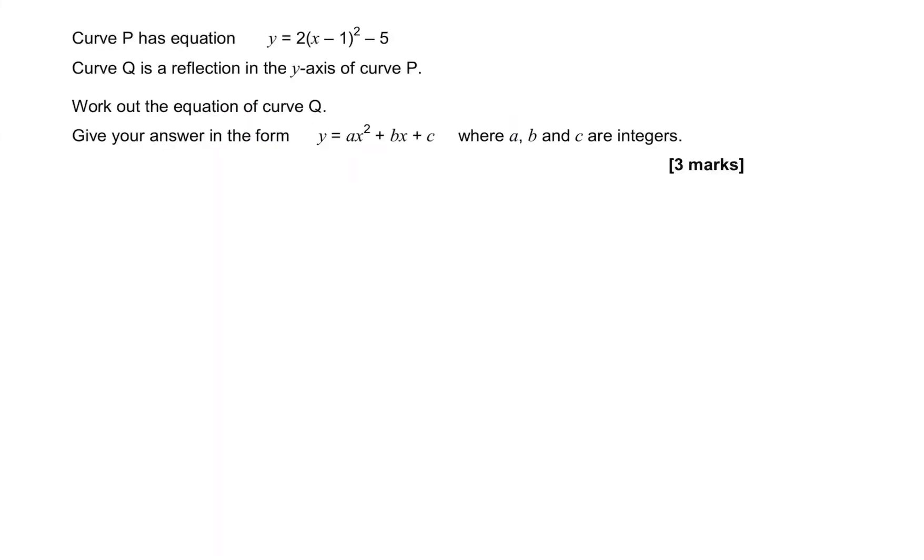In this question we have curve P with equation y equals 2 lots of x minus 1 all squared minus 5. Now this is reflected in the y-axis to give us curve Q, and we are told to find out what this equation is for curve Q.